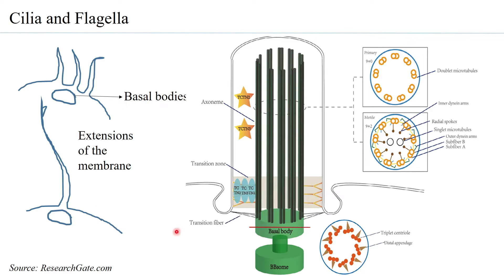From the basal body, microtubules originate, and there is a region called the transition zone. The plasma membrane extends, and within this extended membrane is the entire cilia structure — the microtubule structure — called the axoneme. The basal body has a 9 plus 0 primary structure.